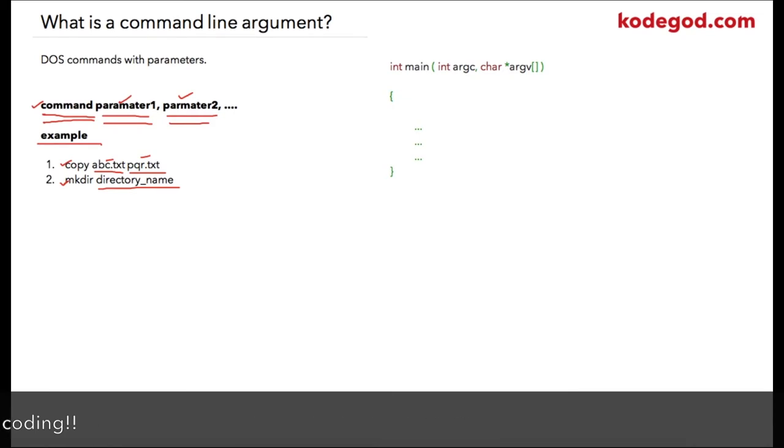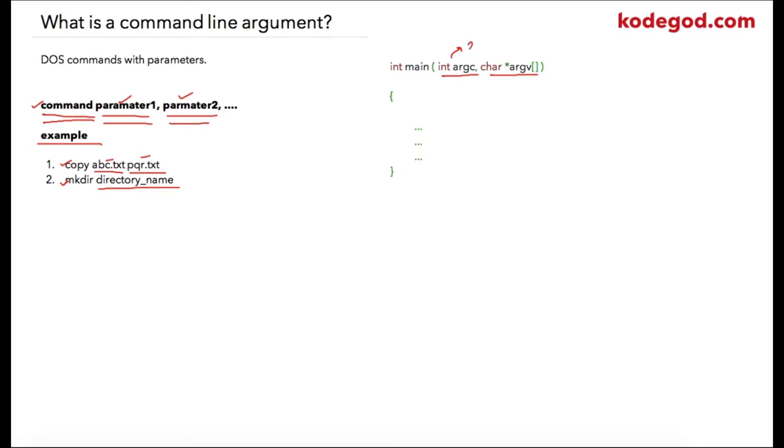First is argc, which is nothing but number of arguments that will be provided to this main function. So it could be two, three, and so on. We require argc as a variable so we can perform operations on parameters that will be sent.